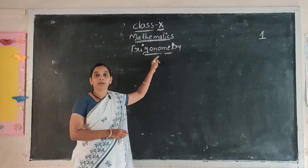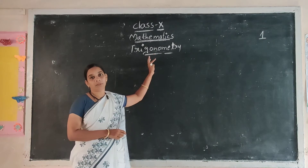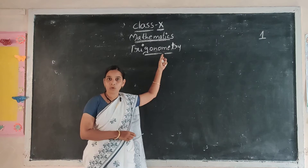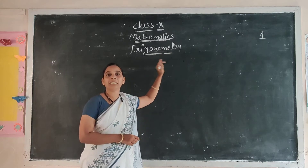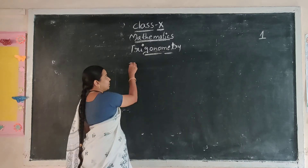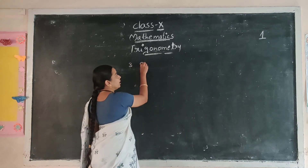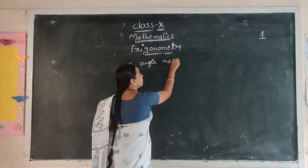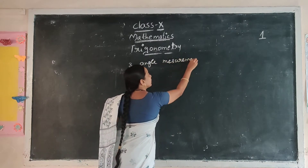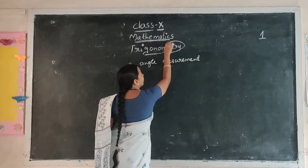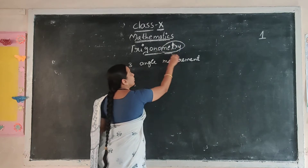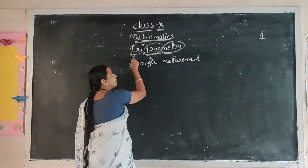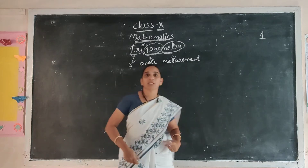Trigonometry is a word derived from three words. That means three angle measurements. Metro means measurement. Gono means angle. Tri means three. So that means three angle measurements.